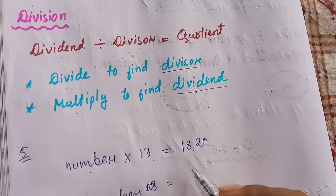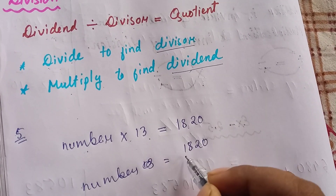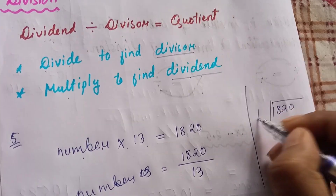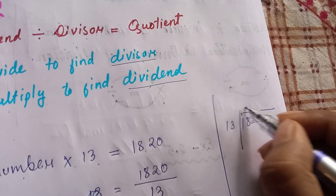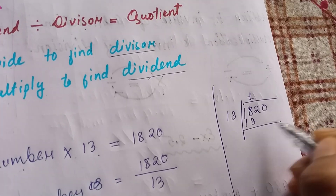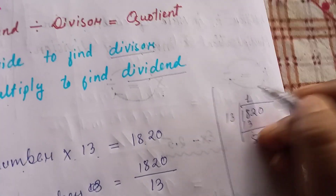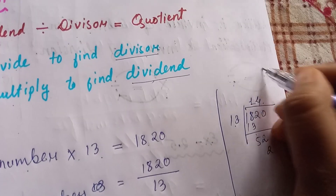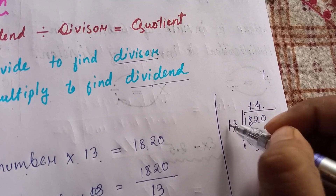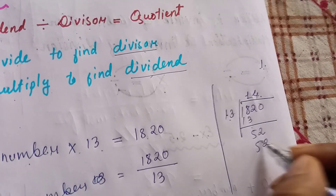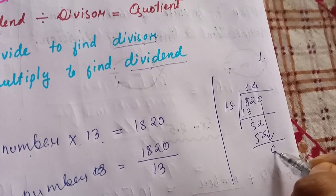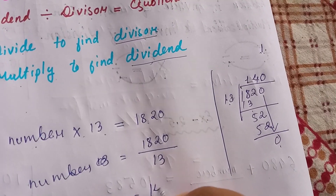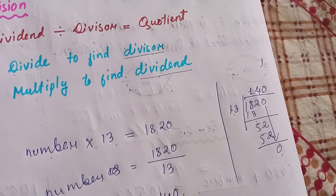When the multiplication sign goes to the other side it becomes division. So we divide 1,820 by 13. Working through: 13 times 1 is 13, and continuing the long division gives us 140. So the answer is 140.